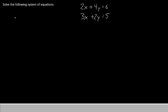The first thing we'll do is create the matrix. To create the matrix, we're going to make a matrix that has three columns: a column for x, a column for y, and a column for the constants.